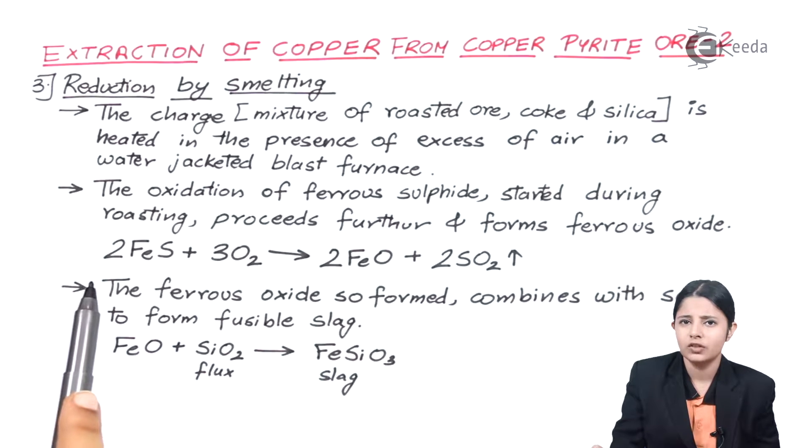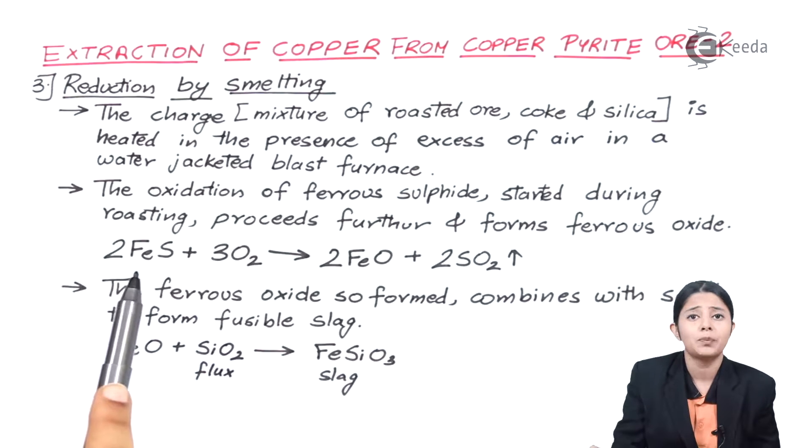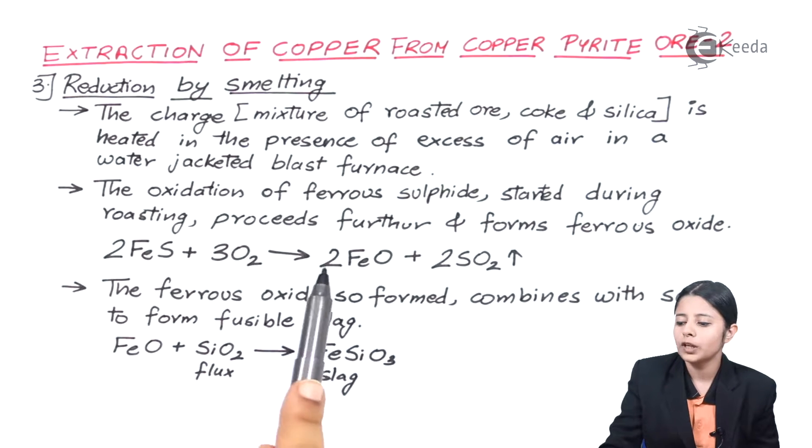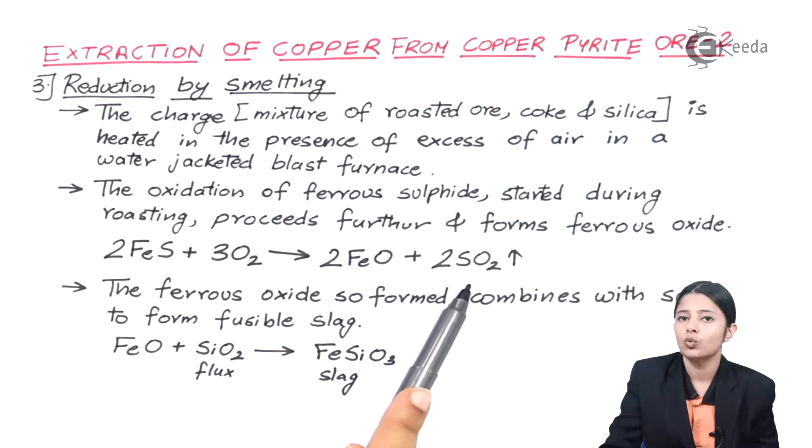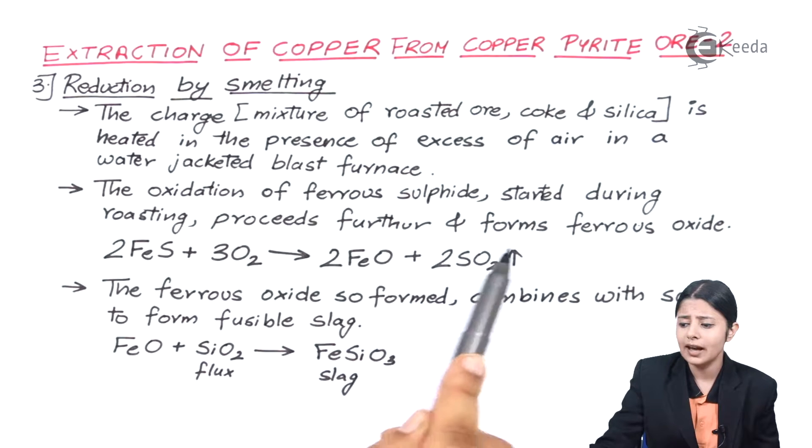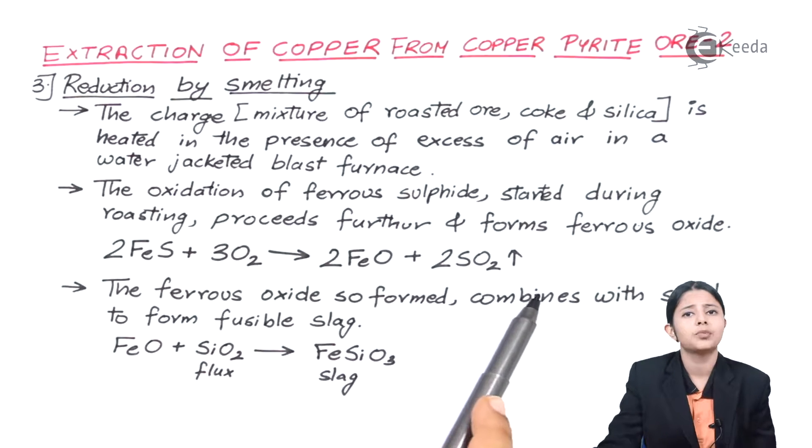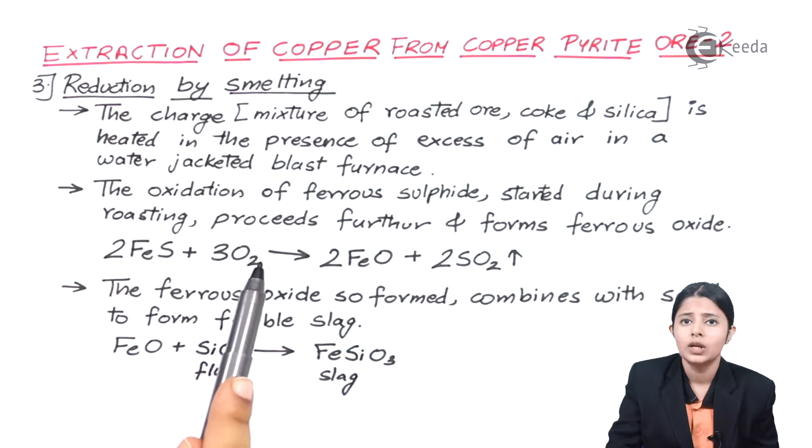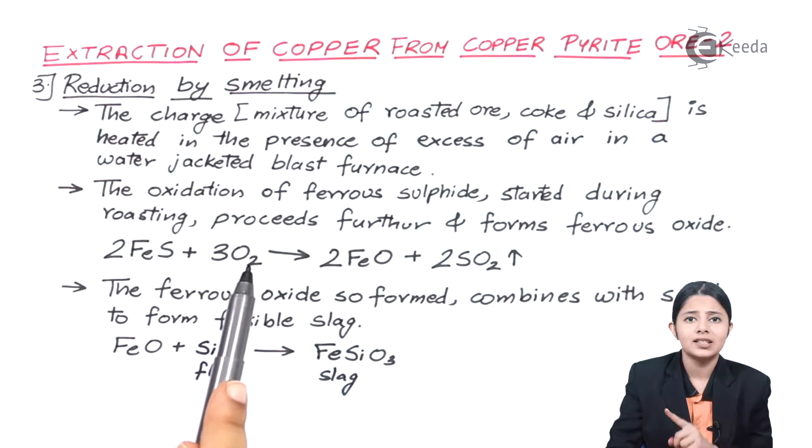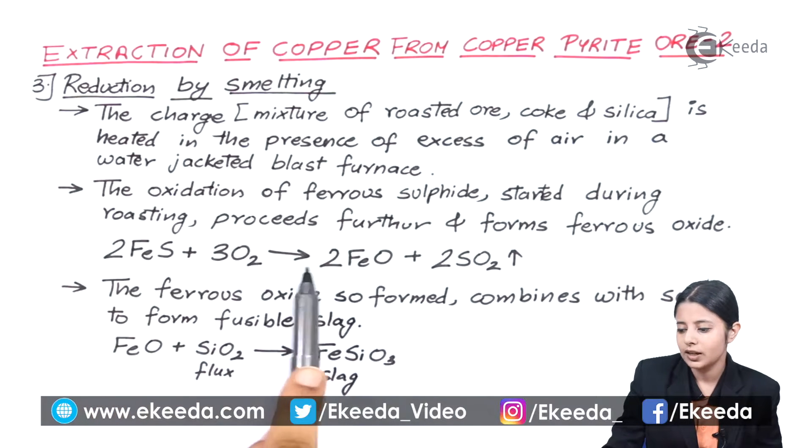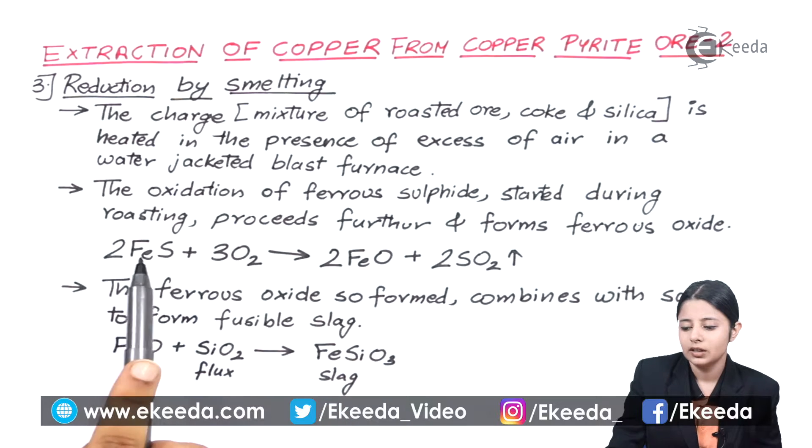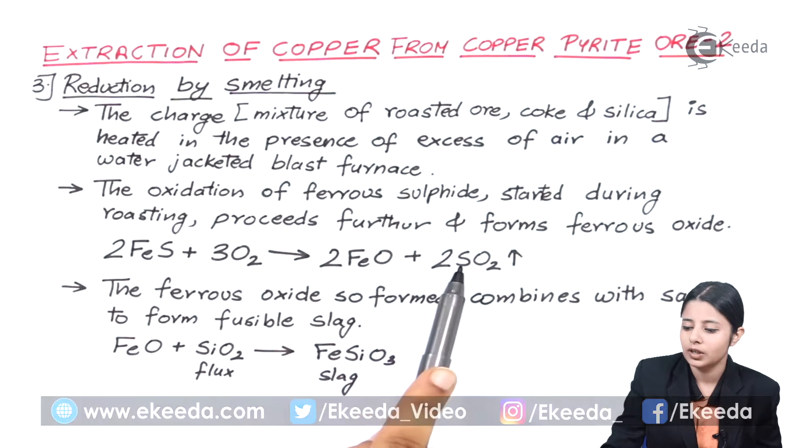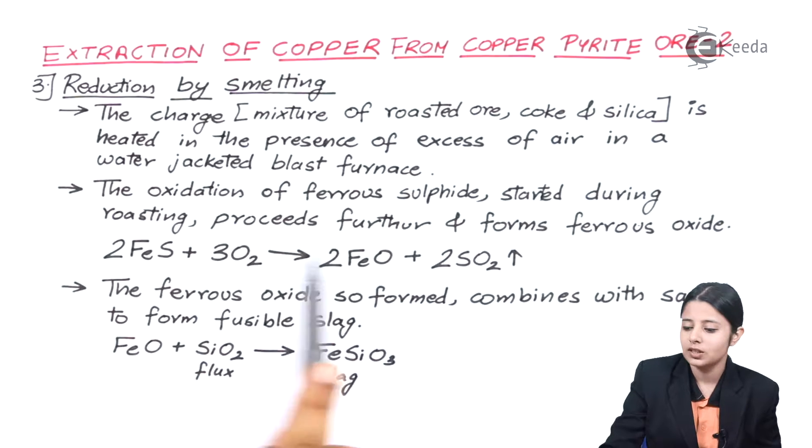So let us see the reactions which take place. We have ferrous sulphide present in the ore. It is 2FeS plus 3O2 forming 2FeO plus SO2 volatile. This arrow upward says that it is volatile. The impurity will go into the air. So what is it? 2FeS plus 3O2. Let us just see the balancing of the reaction. So I have 2Fe on this side, 2Fe on the product side. Sulphur is also 2 on the reactant side, sulphur is 2 on the product side.